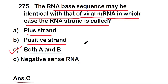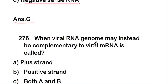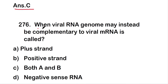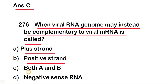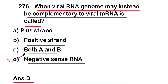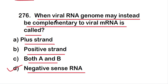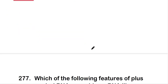The next question: when viral RNA genome is complementary to viral mRNA, it is called — plus strand, positive strand, both A and B, or negative sense RNA? The right answer is option D — negative sense RNA. When the viral RNA genome is complementary to viral mRNA, it is called negative sense RNA.